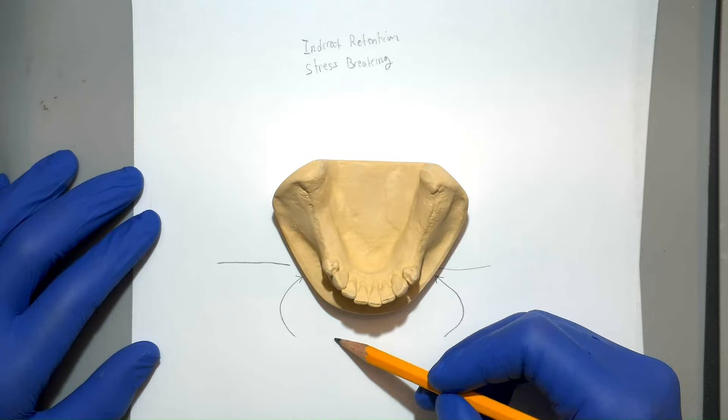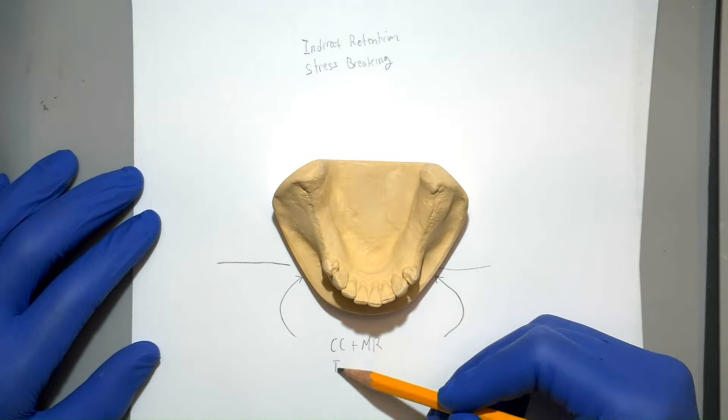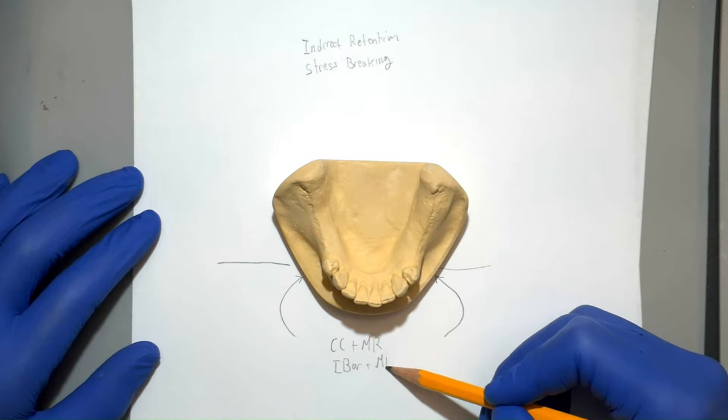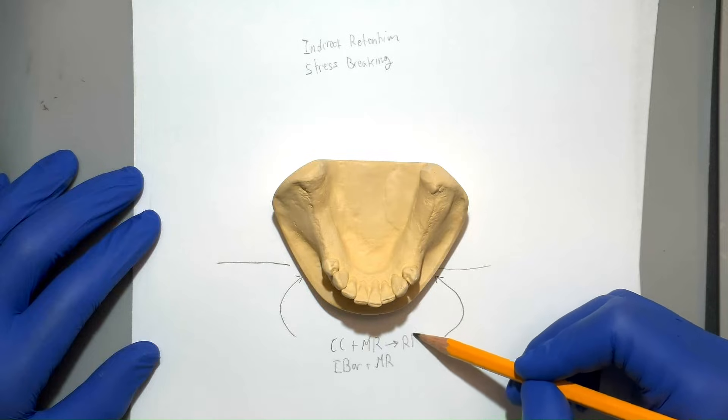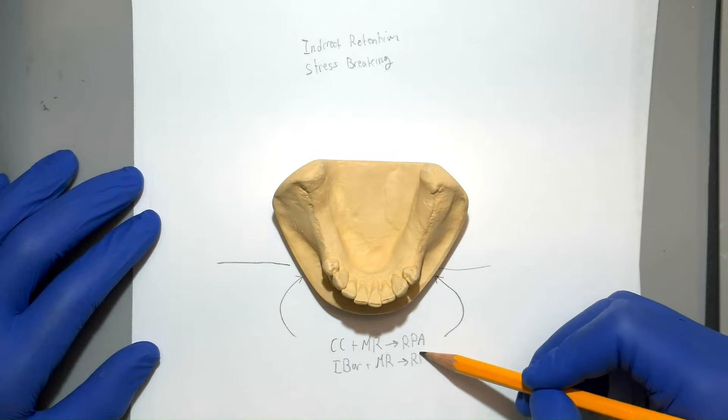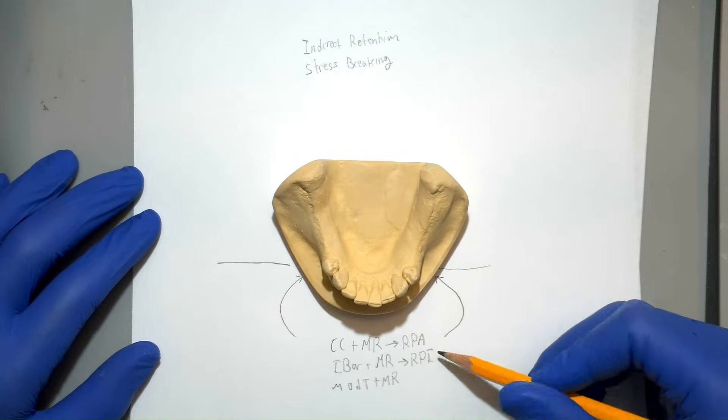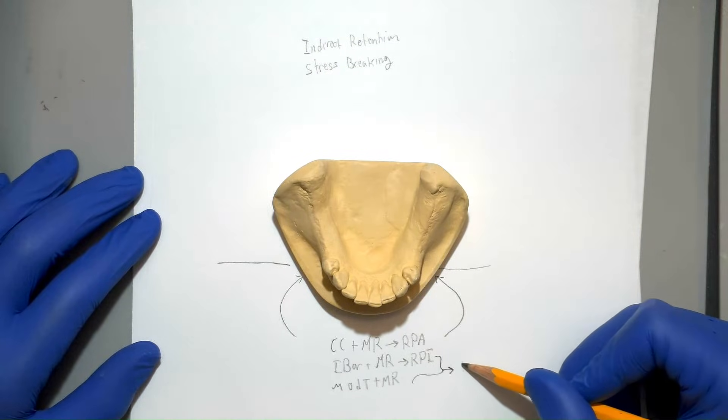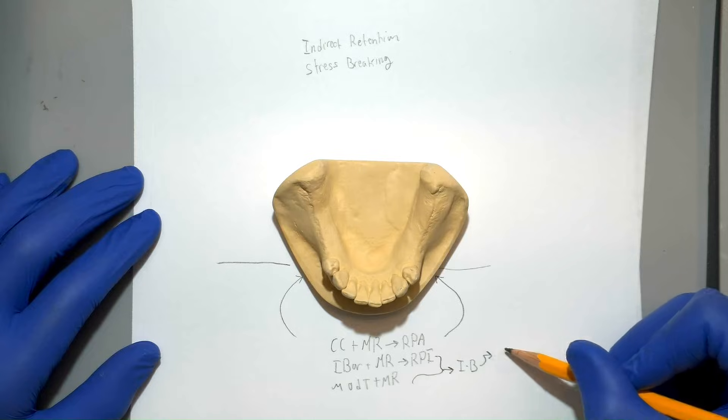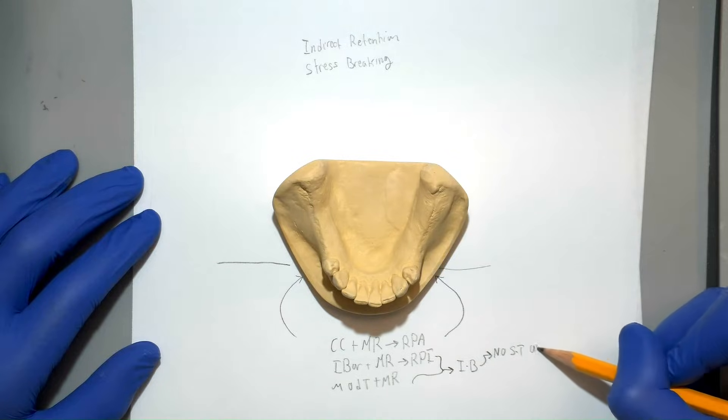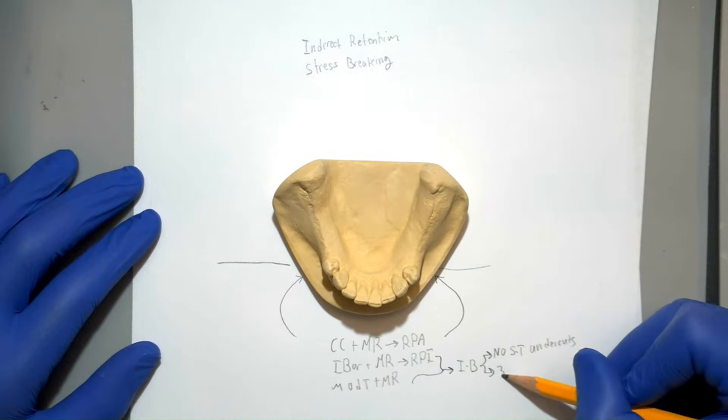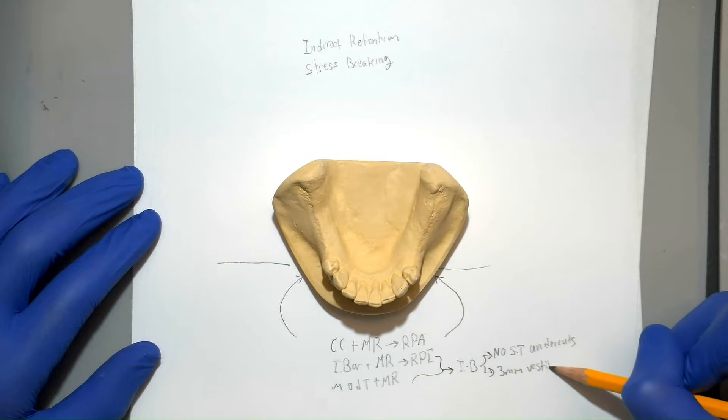Let's look at what options we have for stress-breaking clasps. We have the CC clasp with a mesial breast and the eye bar with a mesial breast, called RPA and RPI, respectively, or the modified T clasp with a mesial rest. It's important to note that the eye bar and the modified T are both infrabulge clasps, which means they're not compatible with a soft tissue undercut or less than 3 millimeters of buccal vestibular depth.